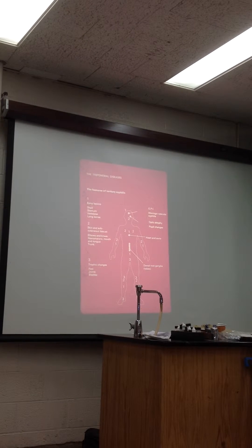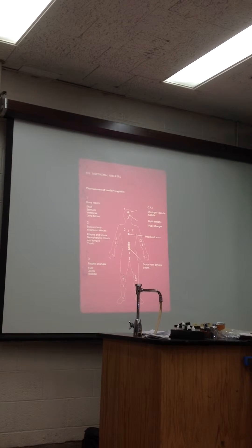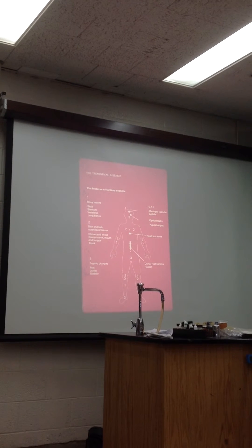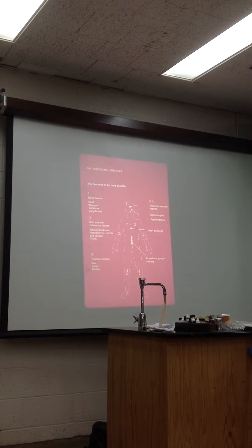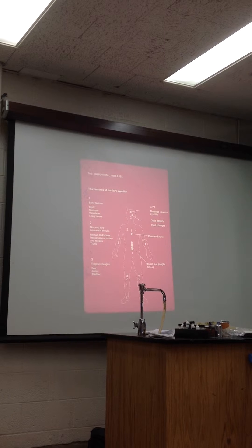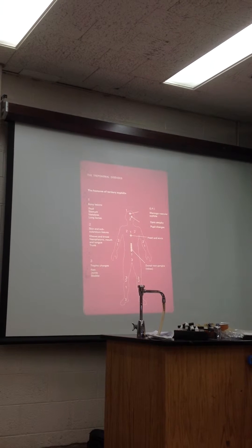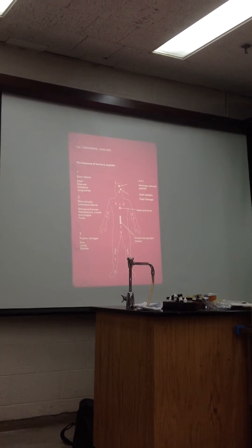This is a treponemal disease. Some of the areas it can affect — it can affect the heart because the organism can eat away at the aorta. Then you could have an aneurysm where the aorta bursts and you can basically bleed out. In other words, the aorta makes it, then the aorta bursts.